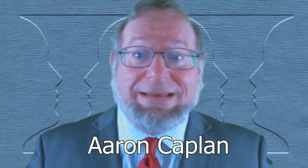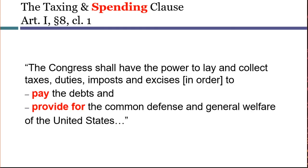In Article 1, Section 8, Clause 1, the Constitution explicitly gives Congress the power to collect taxes. So it stands to reason that Congress has power to spend the money. The words spend or spending don't appear anywhere in the text of the Constitution, but in this section the words pay and provide for do appear. The long-standing understanding of this language is that it authorizes Congress to spend money, and for that reason many modern court opinions refer to this as the Spending Clause.